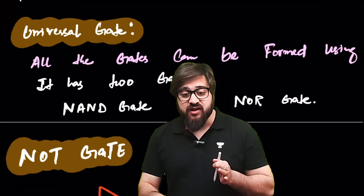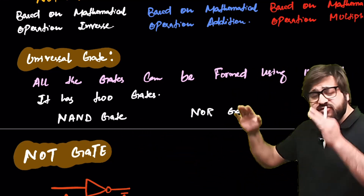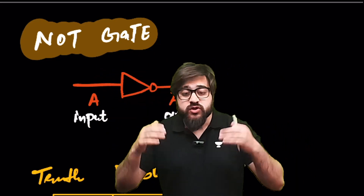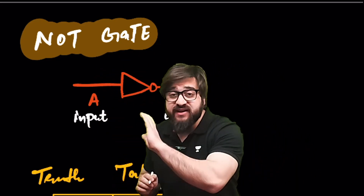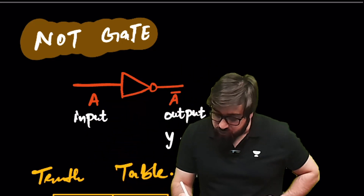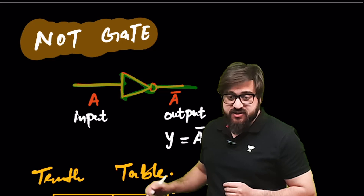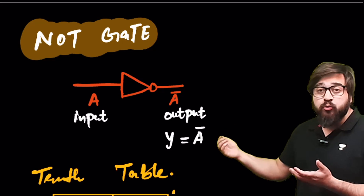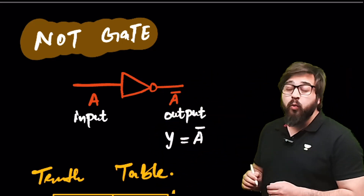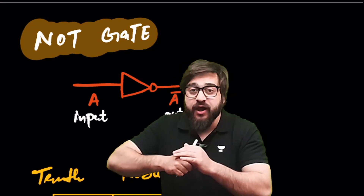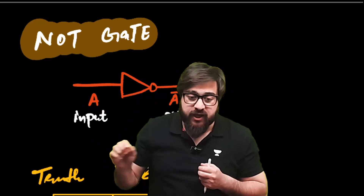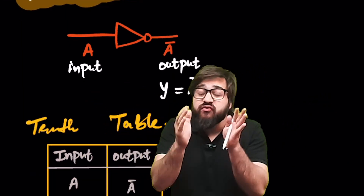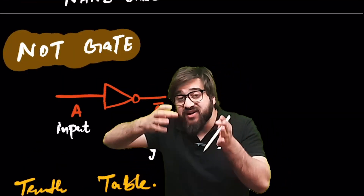We also have universal gates: the NAND gate and the NOR gate. Let's first talk about the NOT gate. The NOT gate is a device in which we give input and it provides us the output. This is the symbol of the NOT gate — it has a bubble. If you give input A, the output will be A-bar, which is the inverse of A. If input is 0, output is 1.